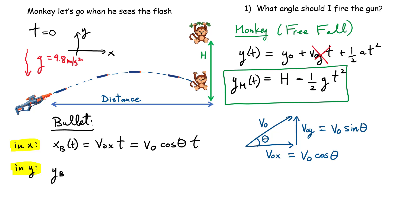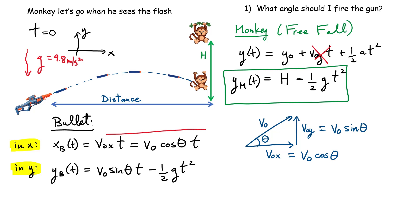For the y-coordinate of the bullet: the bullet starts at the origin so its initial position is zero. We do have an initial velocity for the bullet, which gives the term v₀ sin θ · t. We also have the gravitational term −½g t² for its height. So the y-position of the bullet is: y_bullet(t) = v₀ sin θ · t − ½g t². We now have three equations describing the motion of both the monkey and the bullet.